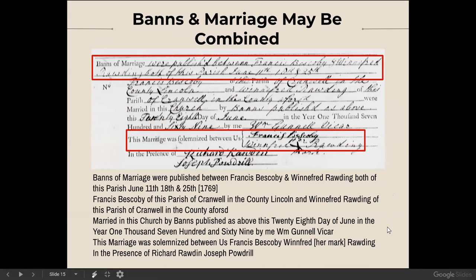Here's another type of banns — a combined banns and marriage form. The banns of marriage were published between Francis Bescoby and Winifred Rodding, both of the parish, on June 11th, June 18th, and June 25th. This form also lets the clergyman record whether or not the marriage was solemnized — and in this case it was. It was solemnized three days after the last banns were called: the last banns were on the 25th, and the marriage took place on the 28th of June.